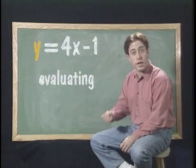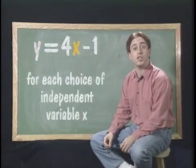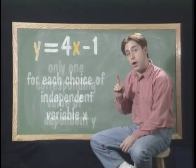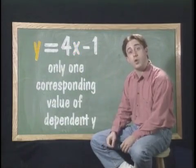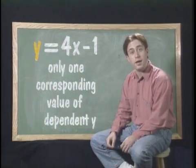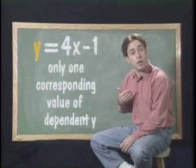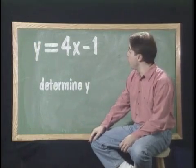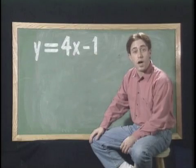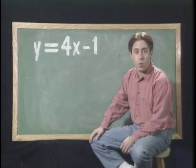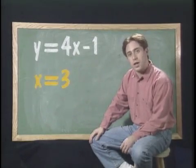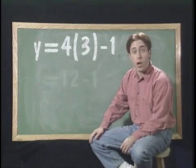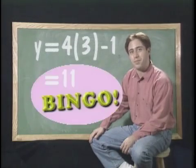It illustrates the general concept of a function: for each choice of the independent variable x, there is one and only one corresponding value of the dependent variable y. The equation tells us exactly how to determine that y value. In the case of y equals 4 times x minus 1, if x equals 3, then y equals 4 times 3 minus 1, or 12 minus 1, which is 11.